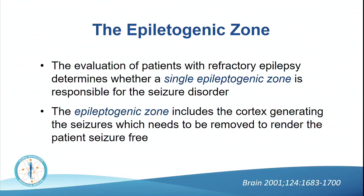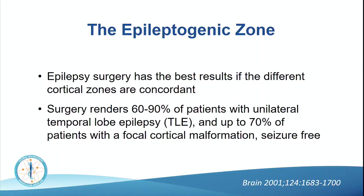The evaluation of patients with refractory epilepsy determines whether a single epileptogenic zone is responsible for the seizure disorder — the cortex generating seizures which needs to be removed to render the patient seizure-free. Epilepsy surgery has the best results when different cortical zones are concordant, rendering somewhere between 60 and 90% of patients with unilateral temporal lobe epilepsy and up to 70% of patients with a focal cortical malformation seizure-free.